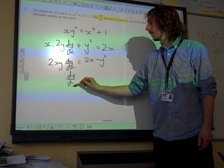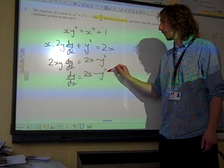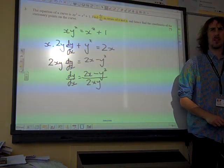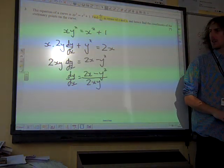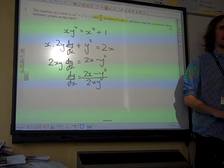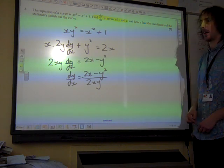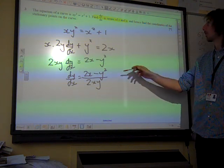I think we've got 2xy dy by dx equals 2x minus y squared. So dy by dx is that divided by 2xy. There are things that you could do with that to try and tidy up, but leave it like that. We just need to find dy by dx in terms of x and y and there it is. So that's three marks.